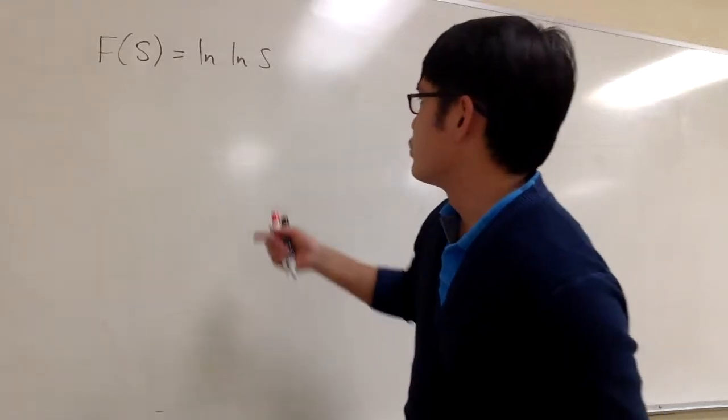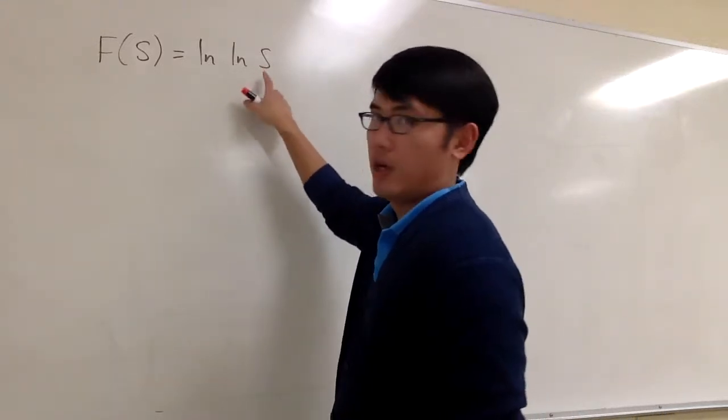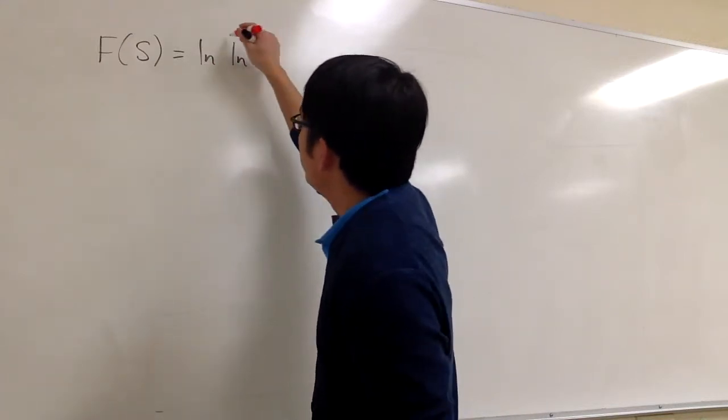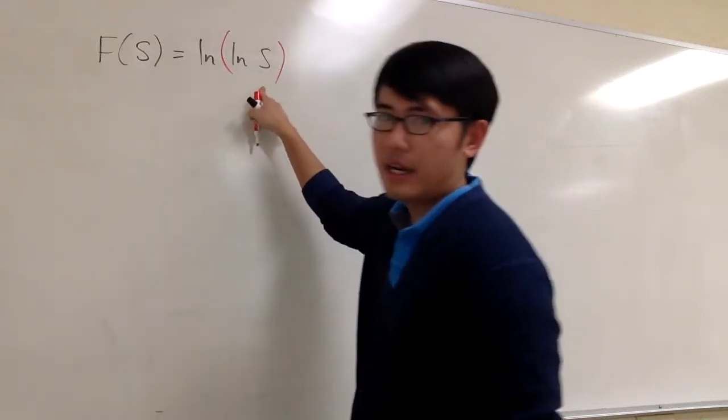Let's say the function is written this way, ln(ln s). This means we have the first ln right here, and then inside we have another ln right here.